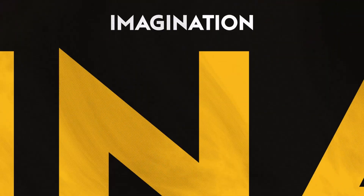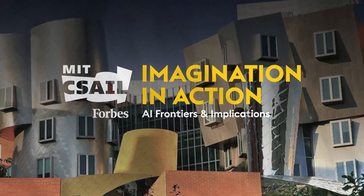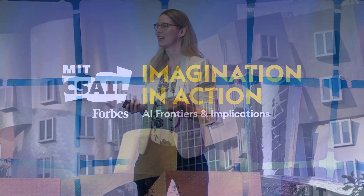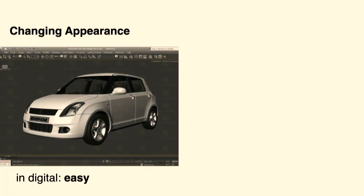Computing has changed how we do many things today. Let me give you one example of an area I particularly care about, which is product design. If I was designing this car and I used this 3D editor, it would be very easy to try out different colors and appearances — just one click with my mouse and I have a red car, a blue car, or a different pattern.